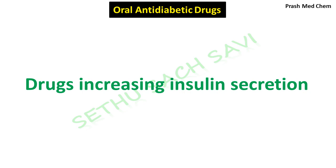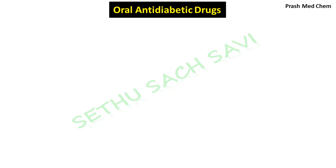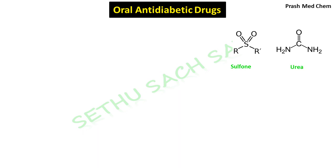Now let's start with the first category — drugs which increase insulin secretion. Before the first class, I want you to identify this moiety, which we discussed in our previous video on classification of anti-malarials. This is the sulfonyl group, where a sulfur atom is attached to two oxygen atoms and R groups.